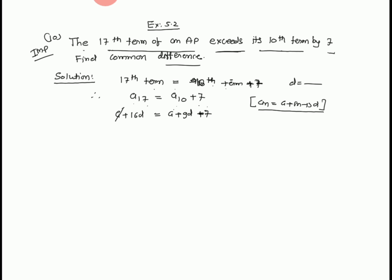A cancels. 16d minus 9d equals 7. 7d equals 7.